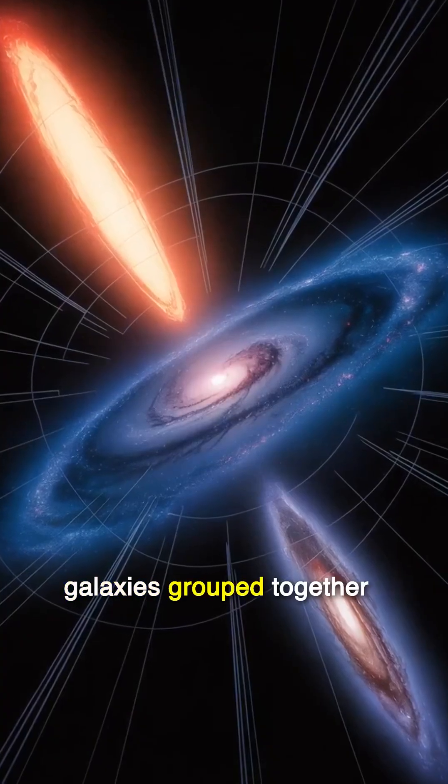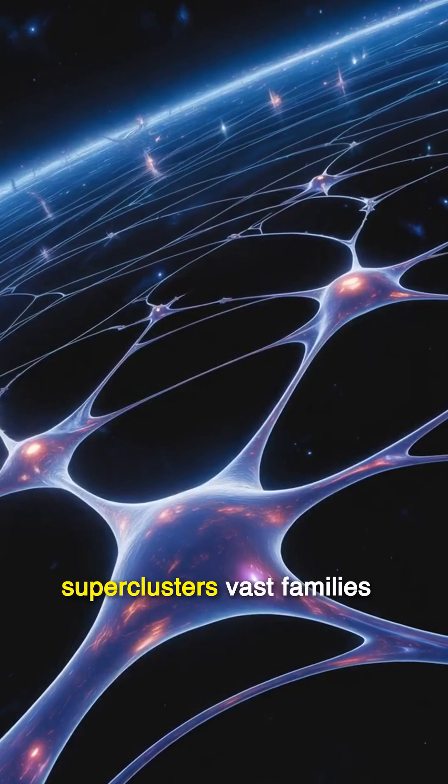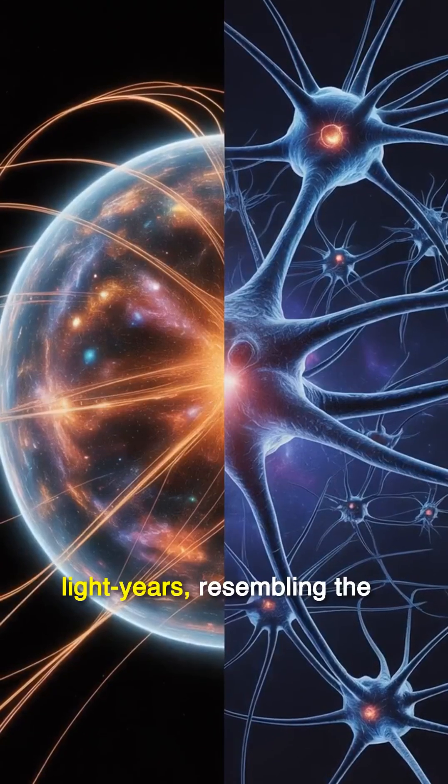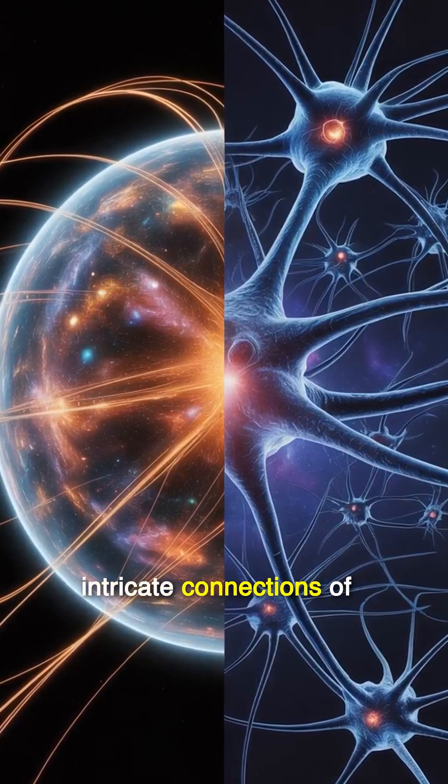As our gaze widens, we find galaxies grouped together in clusters and superclusters, vast families bound by gravity. These structures weave a cosmic web, stretching billions of light years, resembling the intricate connections of neural pathways.